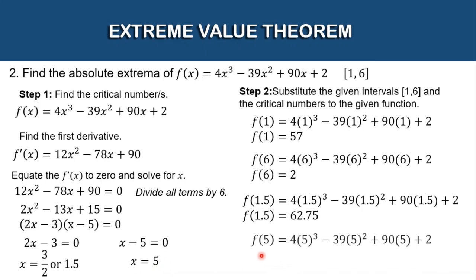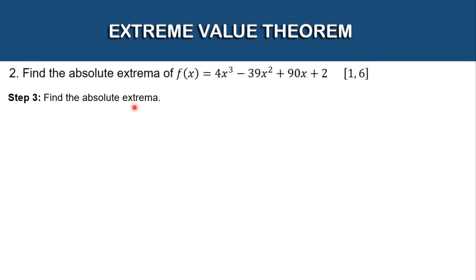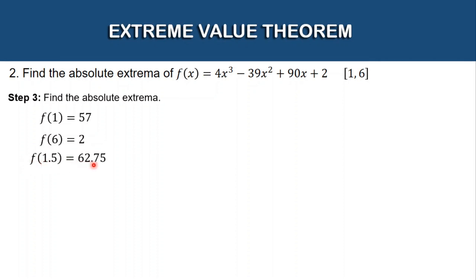And for our fourth value, x = 5: f(5) = 4(5³) − 39(5²) + 90(5) + 2. Simplifying, the answer is −23. Now that we have these four values — f(1) = 57, f(6) = 2, f(1.5) = 62.75, and f(5) = −23 — let's determine which are the extrema.